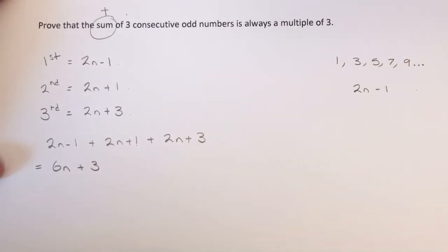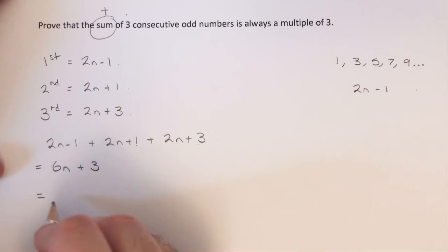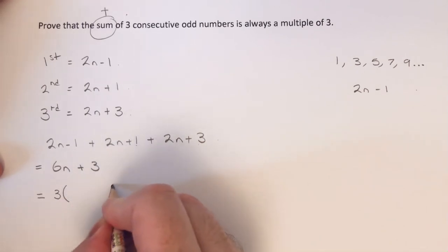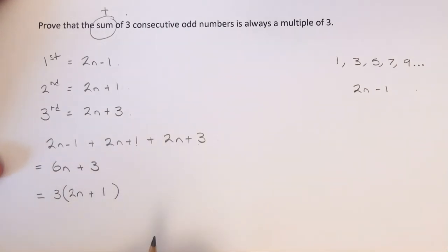So we've just got to now prove that this is a multiple of 3. We can do this by factorising 6n plus 3. We just need to take 3 out. And inside the brackets, we're going to have 2n plus 1. So this proves that we have a multiple of 3 here. Hence we've proved this algebraic proof.